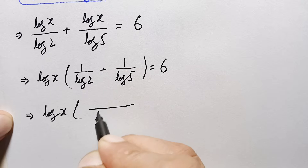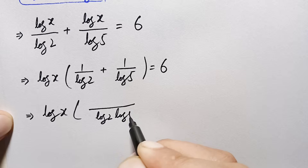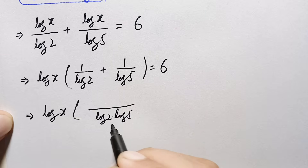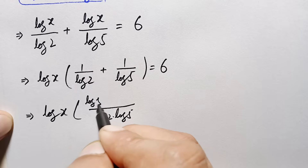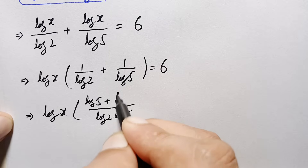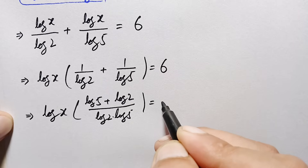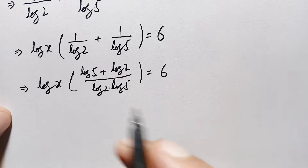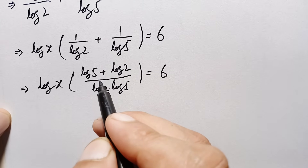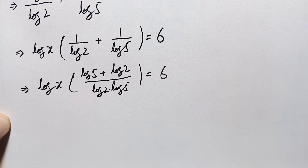Adding those two fractions with common denominator log 2 times log 5: this gives log of x times (log of 5 plus log of 2) over (log of 2 times log of 5) is equal to 6.